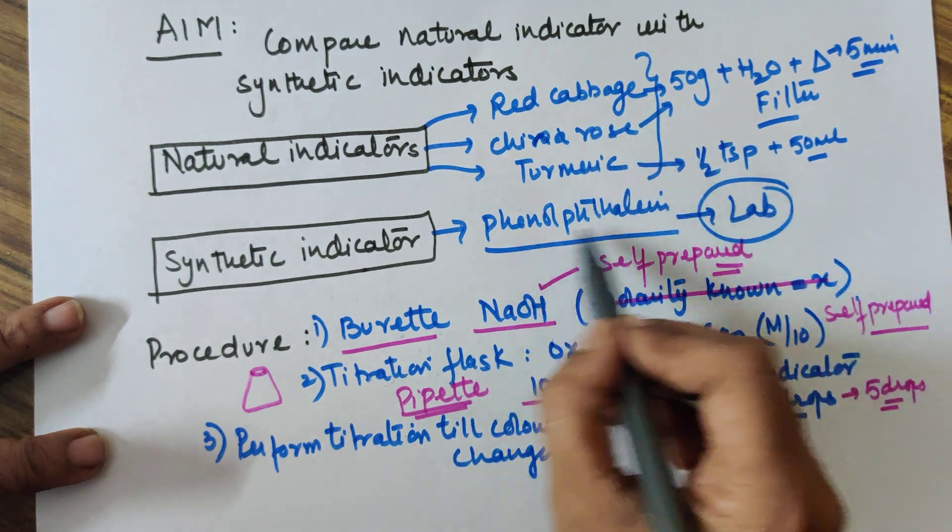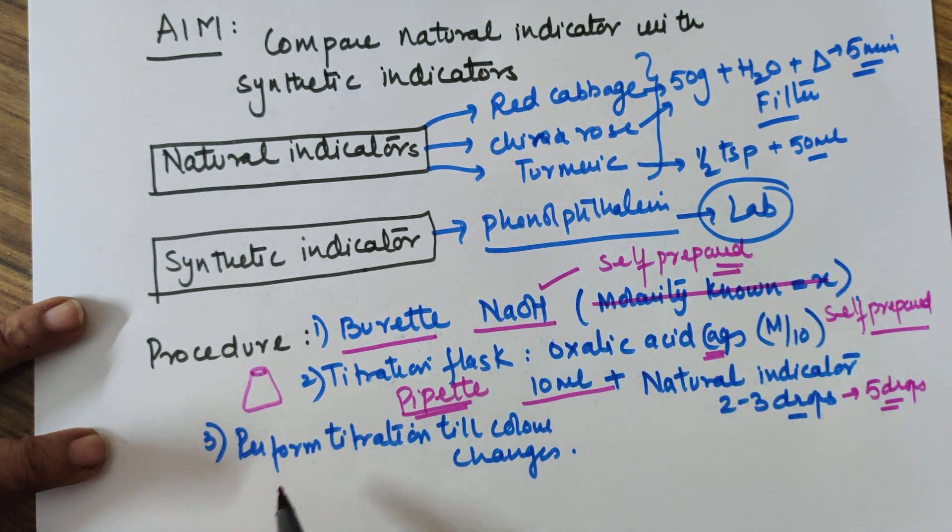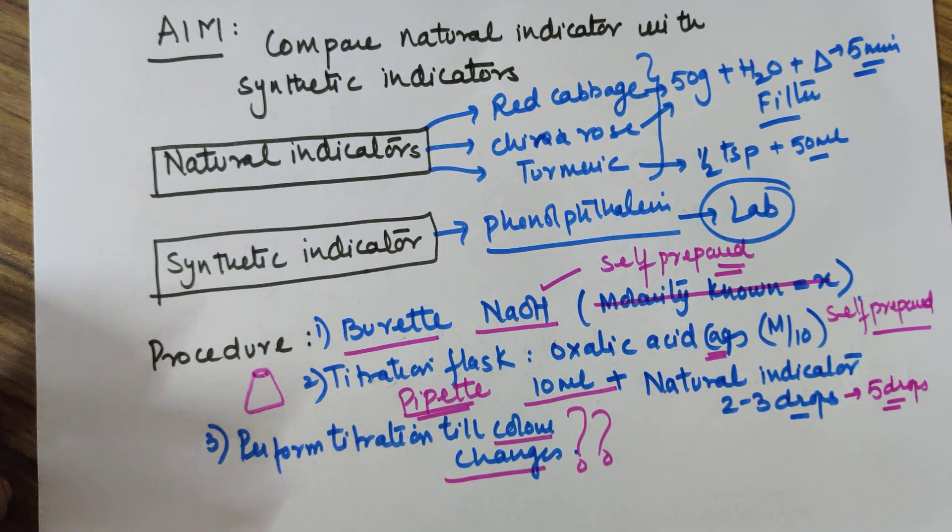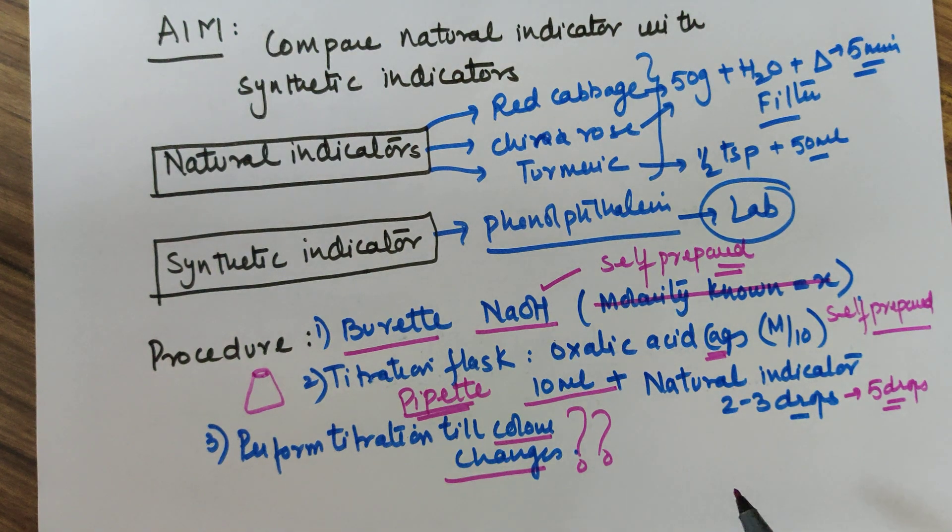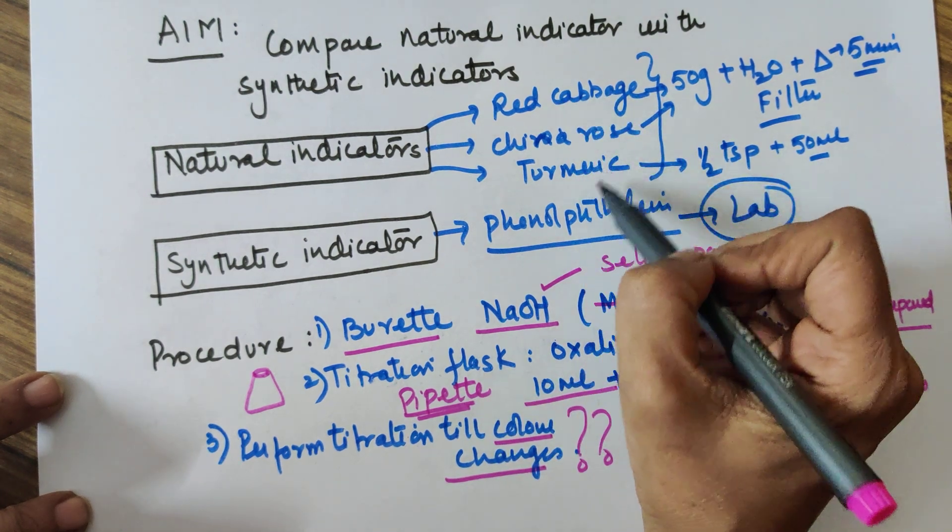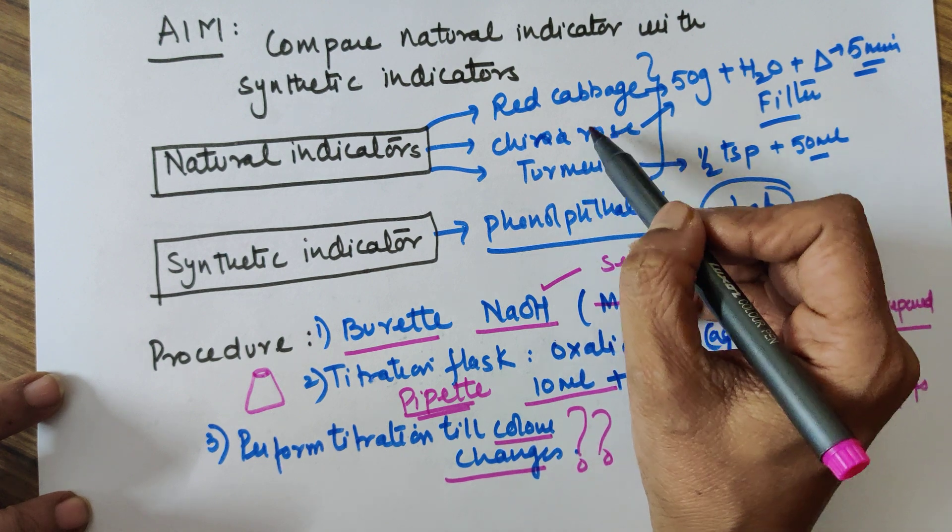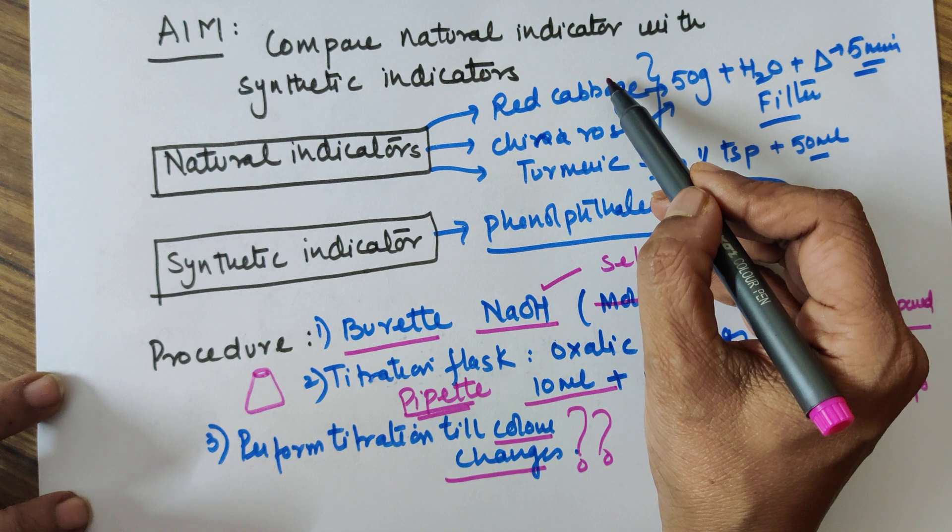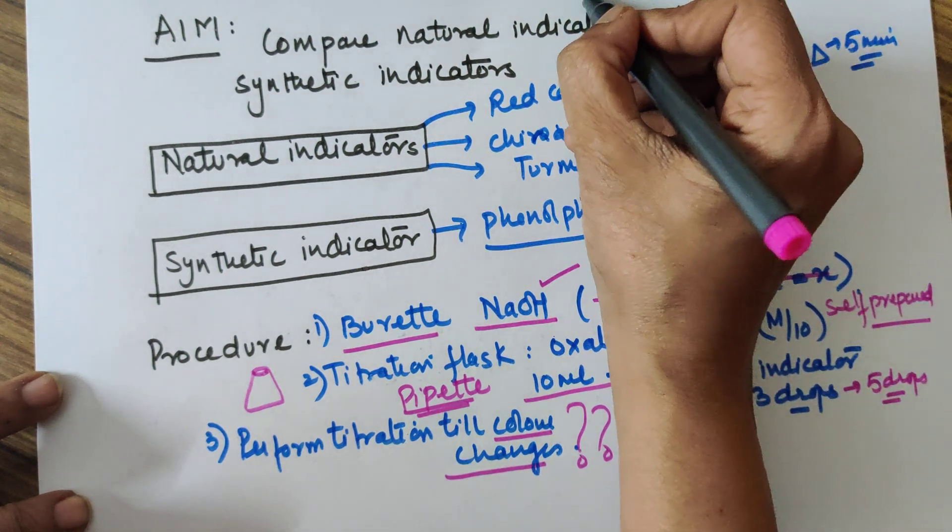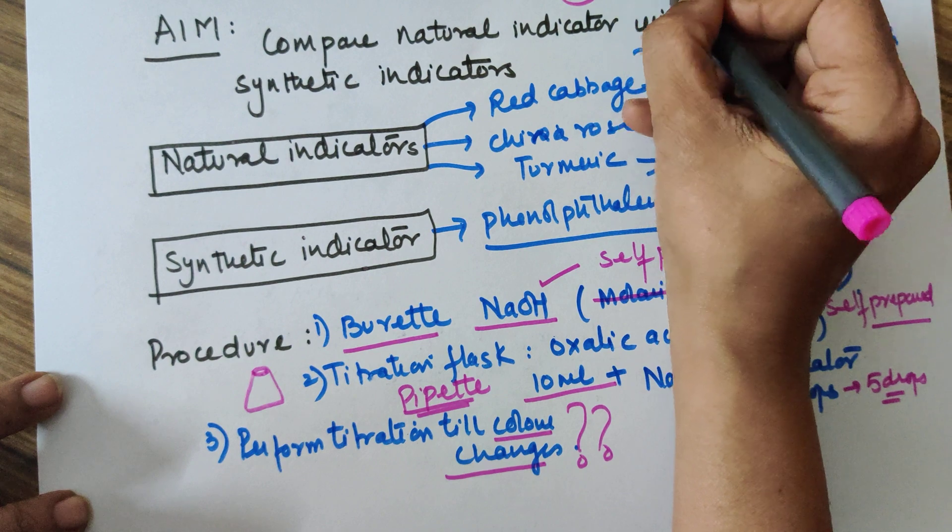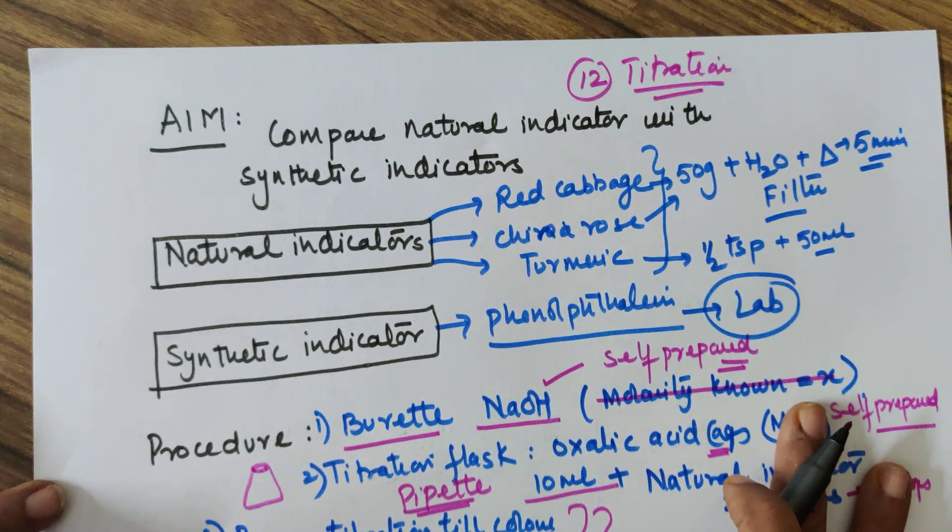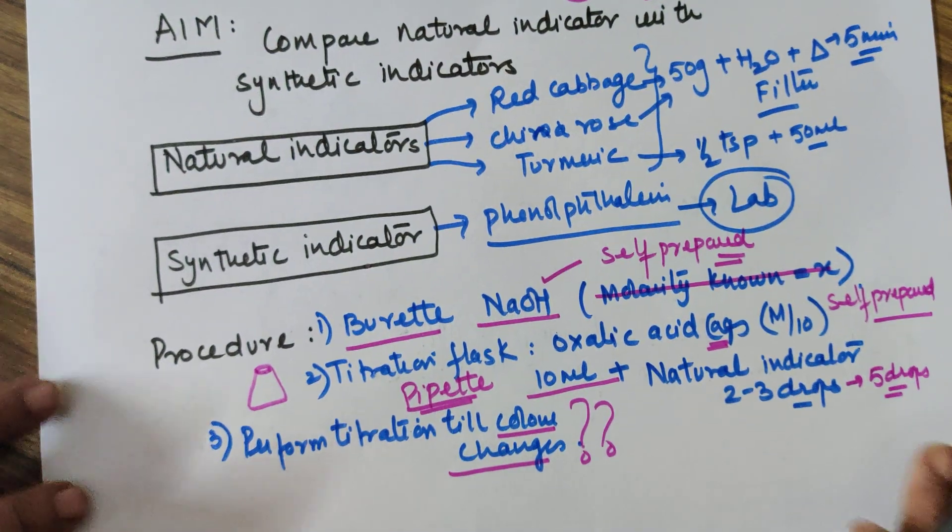But if you take 5 drops of red cabbage, then take 5 drops of China rose also and 5 drops of turmeric also, so they should be in the same amounts, and phenolphthalein also 5 drops. Now perform the titration till you observe a color change. Now that's the big question: how do you know what will be the color change? You will be doing titration of NaOH versus oxalic acid 4 times: once with phenolphthalein, once with turmeric, once with China rose as an indicator, and once with red cabbage. You will be doing at least 3 readings for each one of them, which means at least 12 titrations.